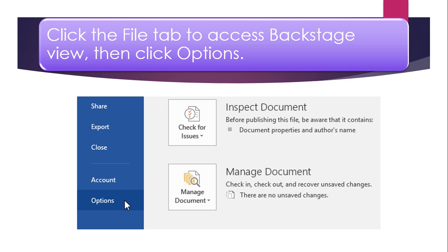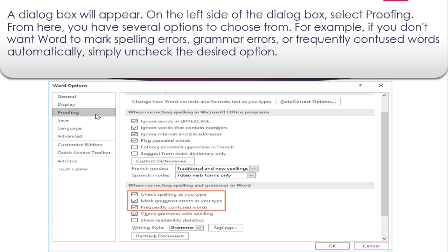We are going to see how to do that. Click the File tab to access Backstage View, then click Options. As you can see in this figure, in the File tab the last button is the Options button — we have to click on that. A dialog box will appear. On the left side of the dialog box, select Proofing.